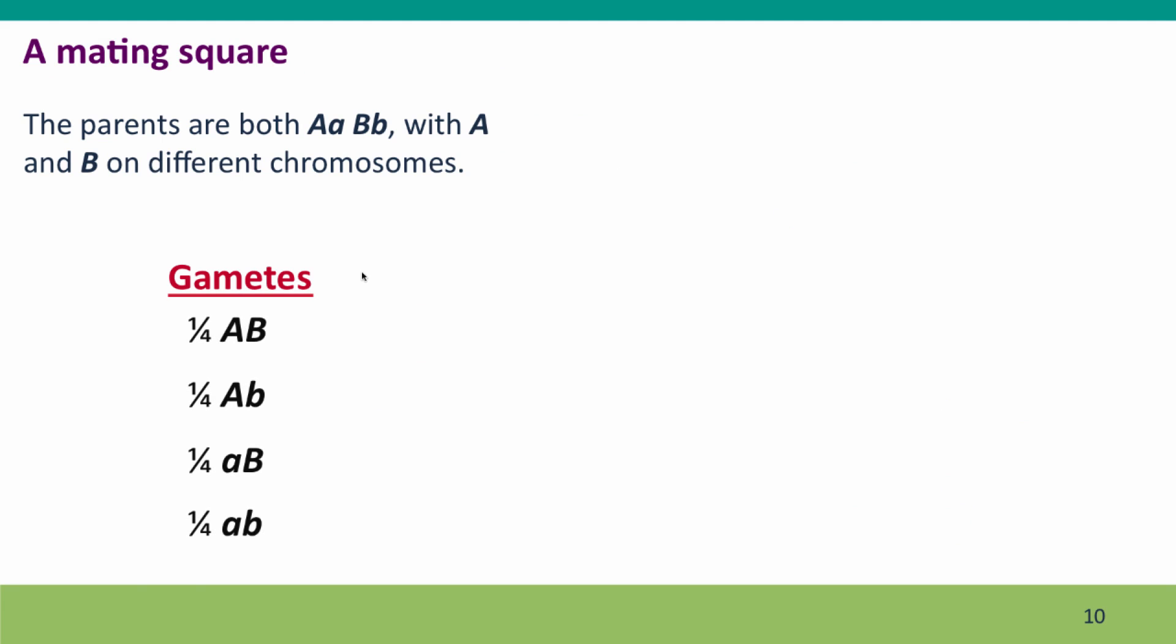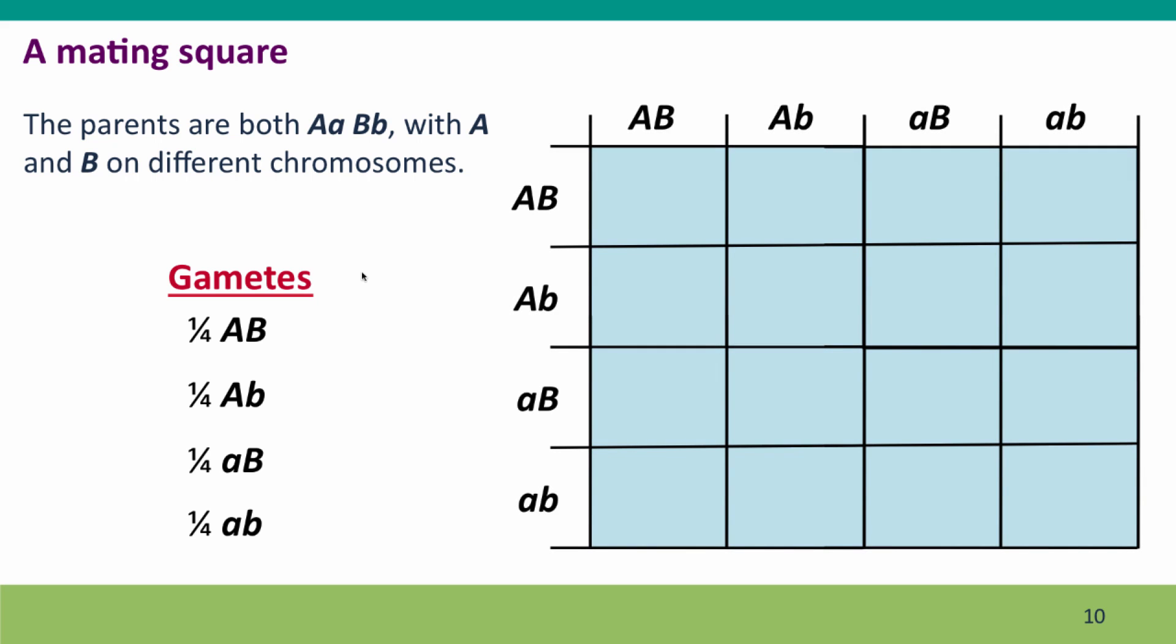Okay, we know what our gametes are. We know what our mating square has to look like and I'm going to leave it to you to figure out what the offspring genotypes are. You know how to use a mating square.